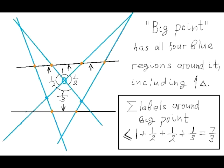We can prove that for a blue point with all four regions around it, where one of these four regions is a triangle, the total number of labels around it can come up to 7 thirds. Since the single blue angle in a triangle contributes 1, each of the adjacent blue regions are at least quadrilaterals contributing up to 1 half each, and the fourth region is at least a pentagon whose blue angle can have a maximum of 1 third. Let's call such a special blue point a big point. All other blue points that don't meet these requirements have the sum of all labels around them not greater than 2, and we will call them small points.